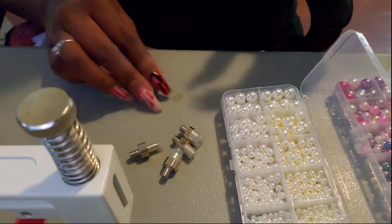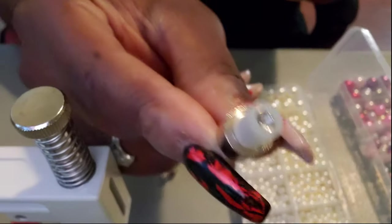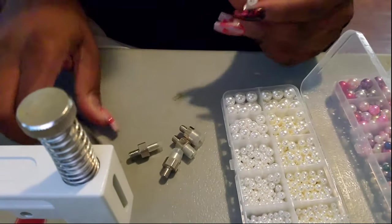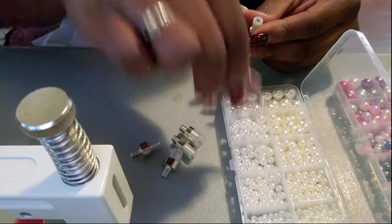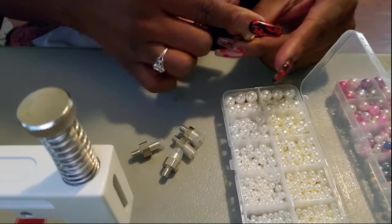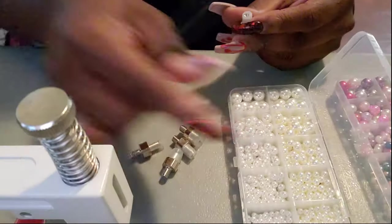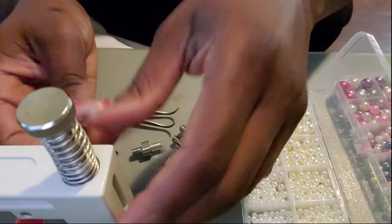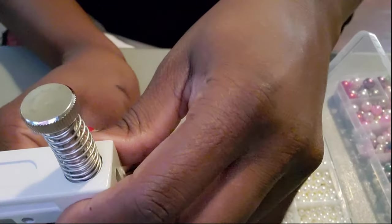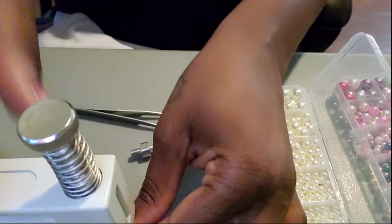So I'm taking the pearl setter and I'm gonna see which side the bead pearl fits, and got it right on the dime. So you take the setter and you screw it into the top part of the beater set, just like so.